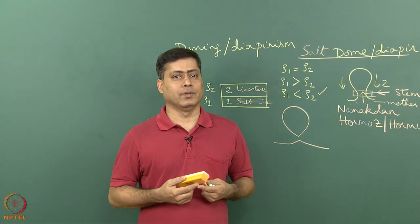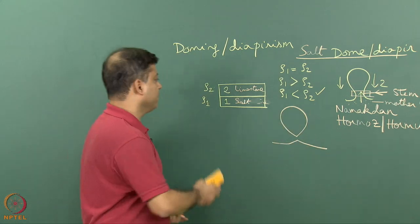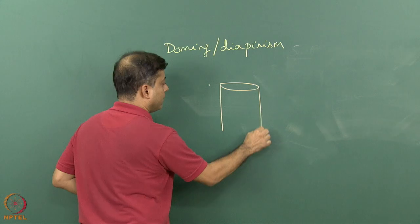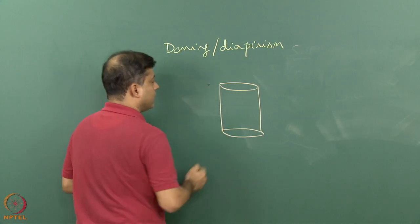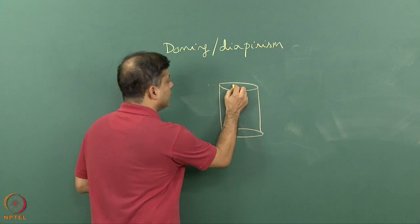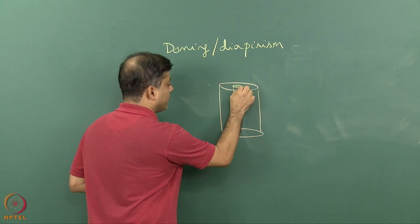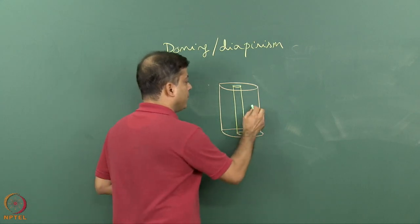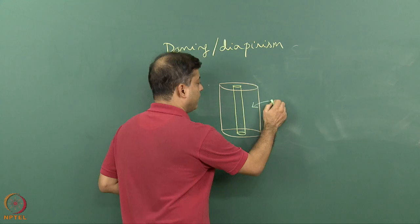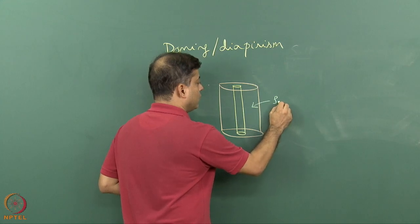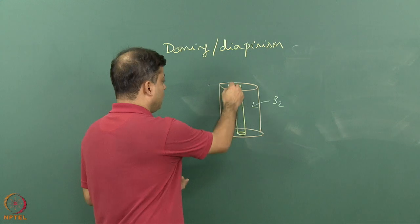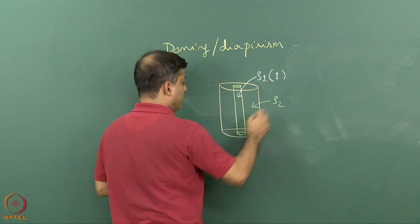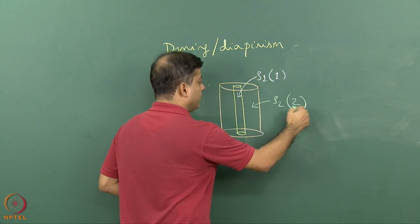Let us look at the involvement of stress in this mechanism. Think of a hollow cylinder, and inside that we are keeping a smaller hollow cylinder. In this outer cylinder we keep a fluid of density rho two, and in the inside hollow cylinder we keep a fluid of density rho one.